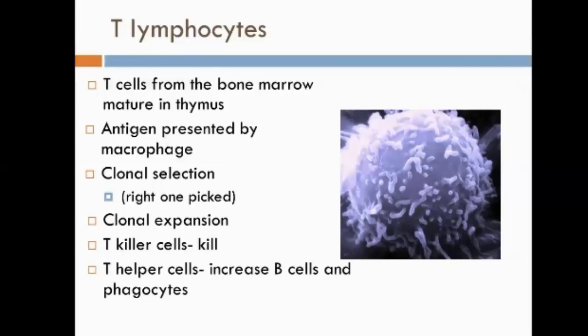T helper cells are really important in helping other cells to proliferate and mature, especially B cells and phagocytes. T helper cells cause an increase in the number of B cells and phagocytes at the site of infection. Finally, T memory cells remain in the blood for a number of years to speed up the response to a second infection if that were to happen.